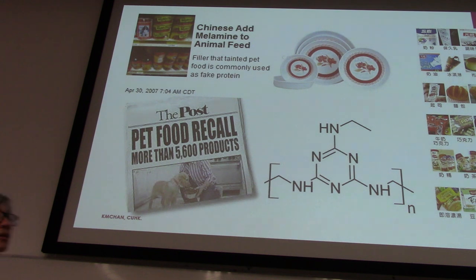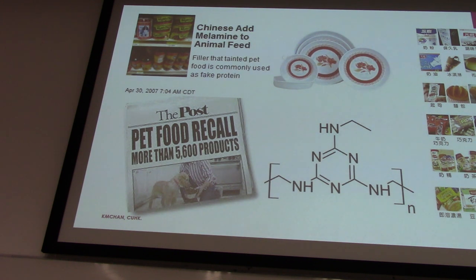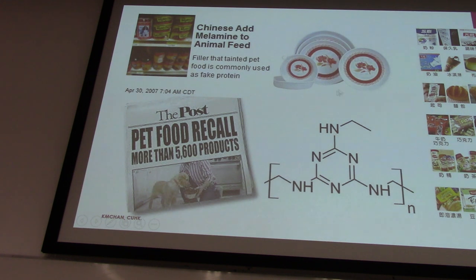So, principles of toxicology. I'm not going to give you a long list, but for many of you in Hong Kong, you might have heard about the story of melamine — 三聚氰胺. Melamine is a chemical used in plastic plates, which is quite common in Hong Kong and China.